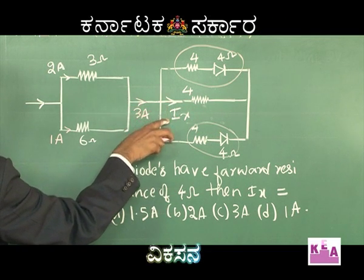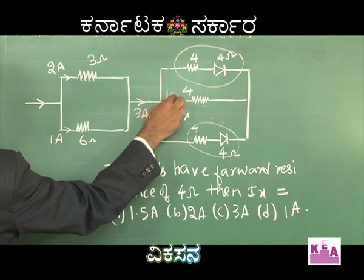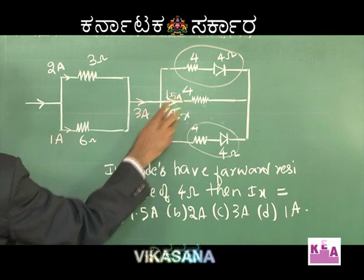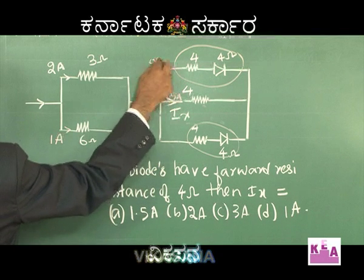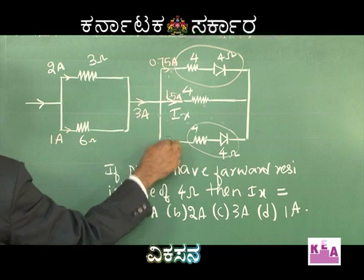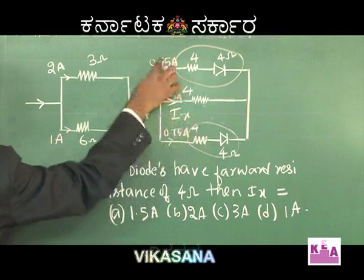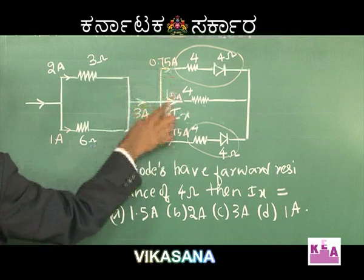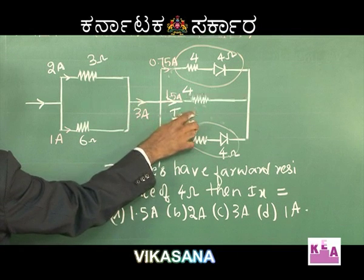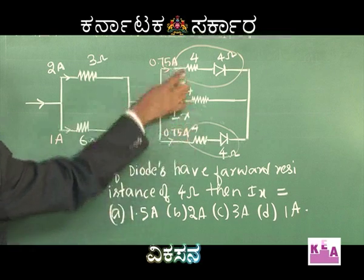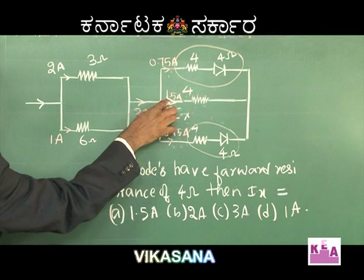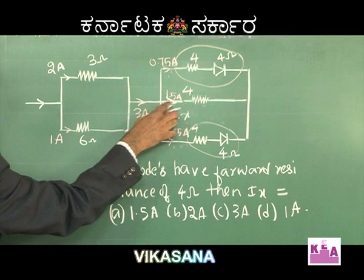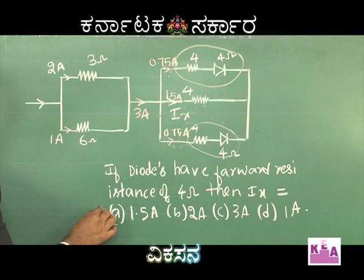This 3 ampere must be divided into 2 equal parts — 1.5 ampere goes one way and 1.5 ampere the other. The 1.5 ampere in each branch is further split: 0.75 ampere and 0.75 ampere. Those values are not required here. What is required is that Ix = 1.5 ampere. Therefore, option A is correct.